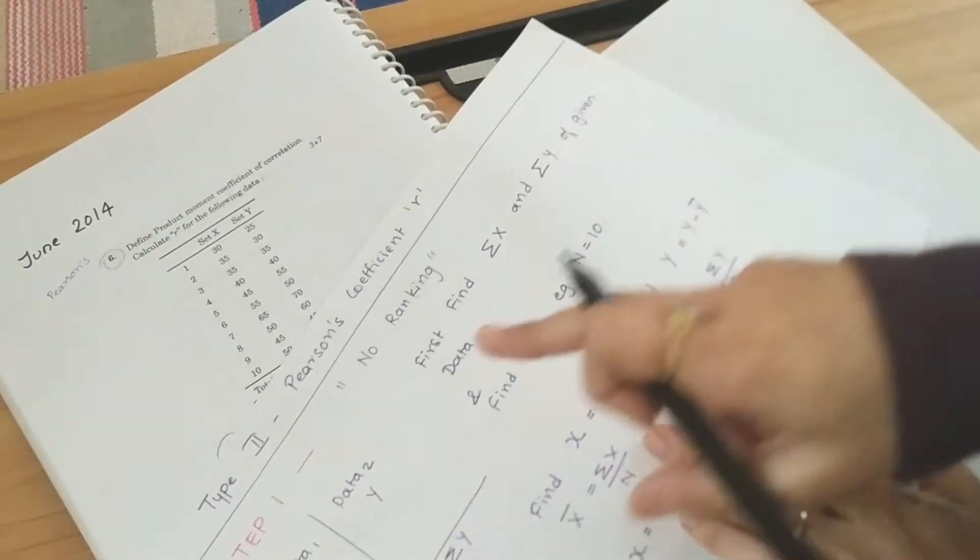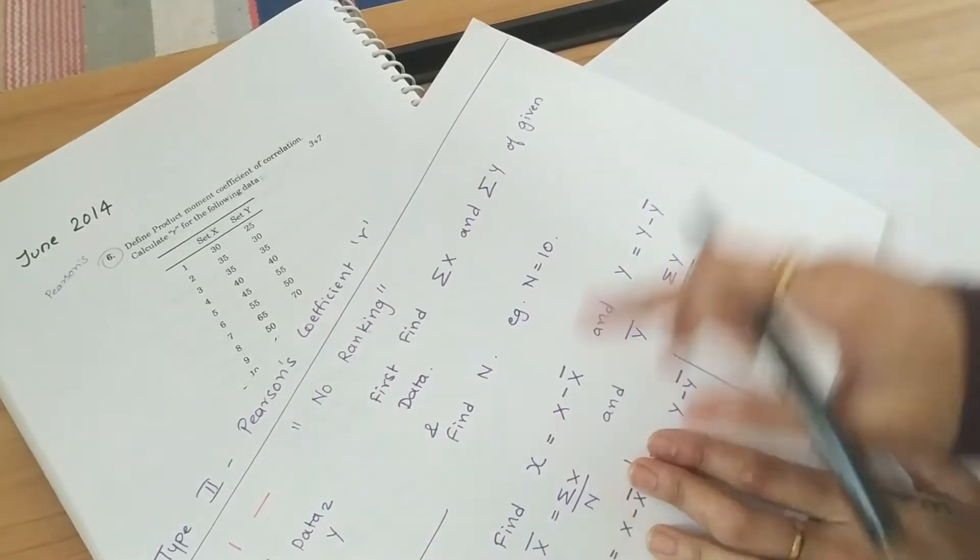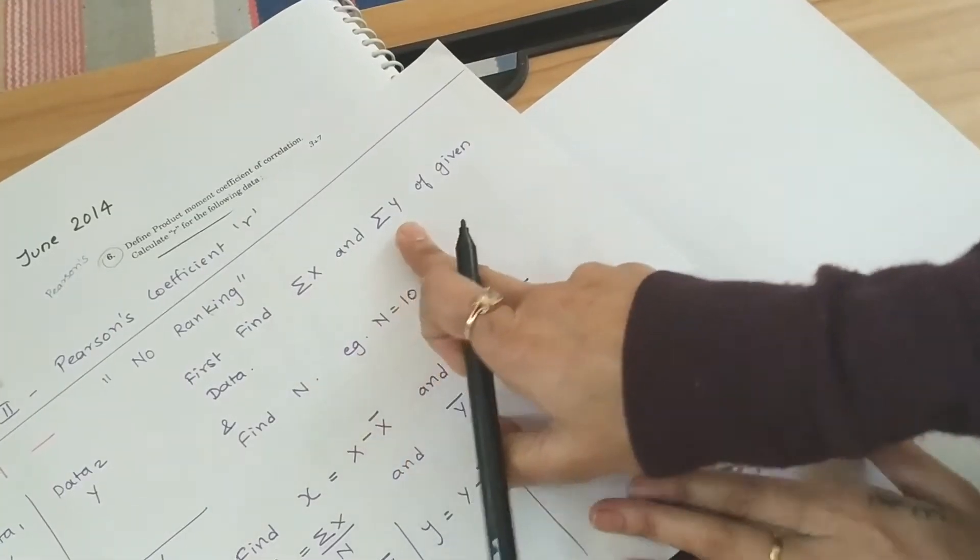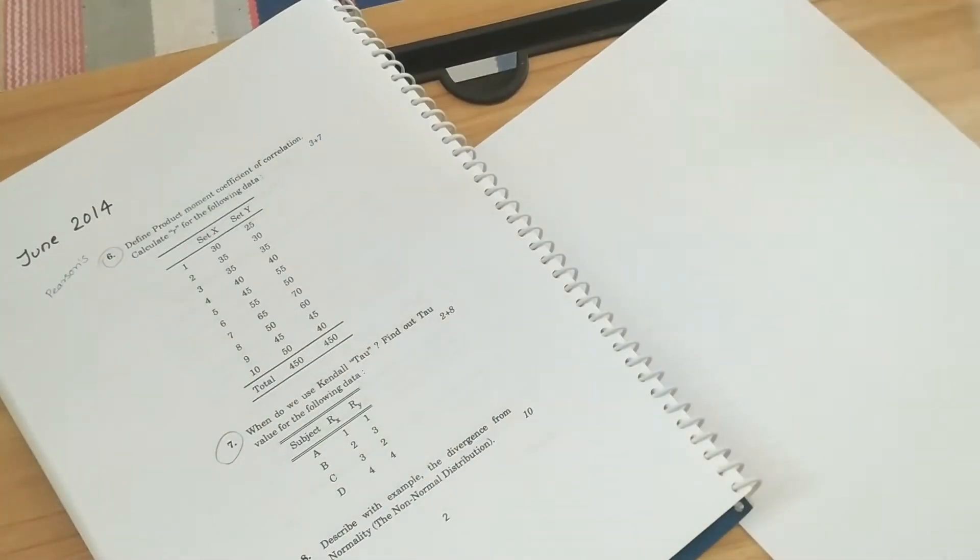Now first step is there is no ranking for Pearson's coefficient. We have to only find sigma x, sigma y and n and then calculate further. Let's see how.